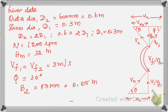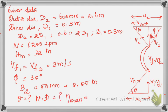Next, we write what we need to find: first, determine the vane angle at inlet θ; second, work done per second by the impeller; and third, manometric efficiency ηm. These are the three things we have to determine.